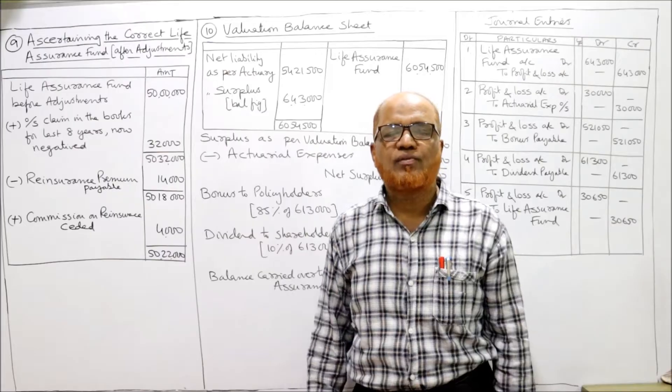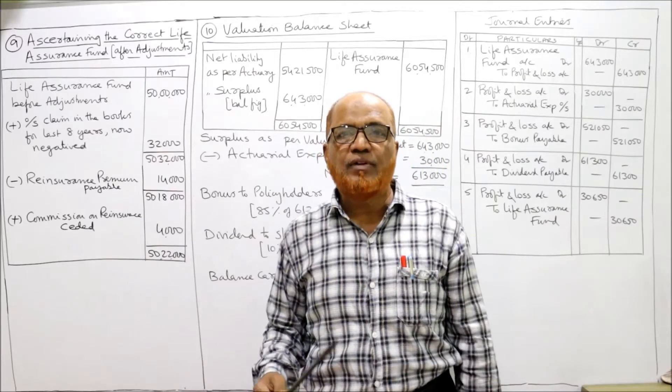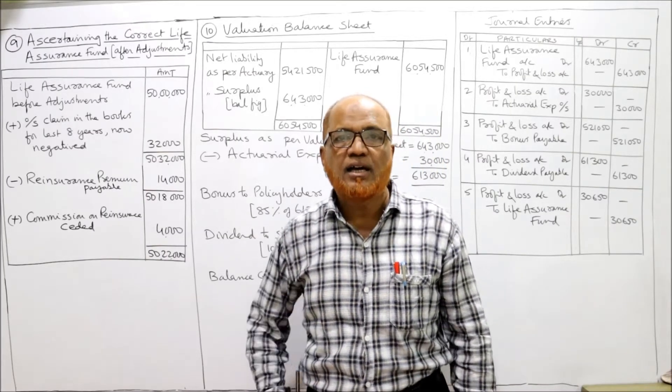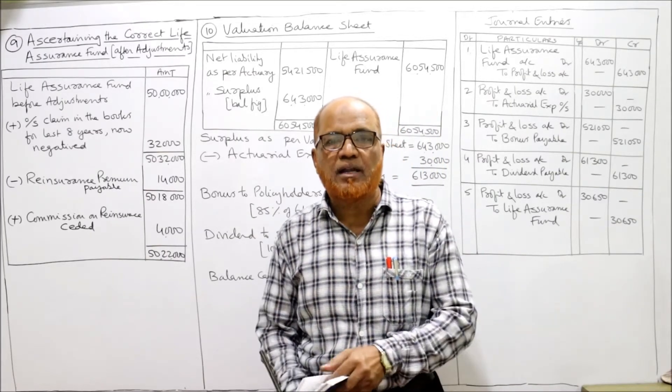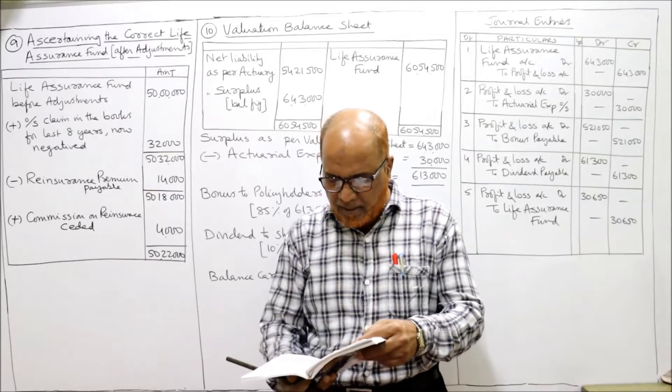To the life insurance fund we add the incomes and we deduct the expenditure. Now we'll see the adjustments one by one.